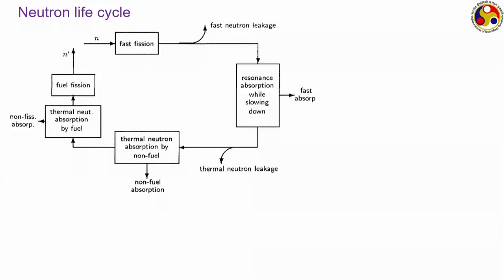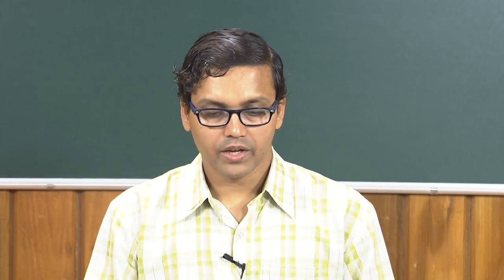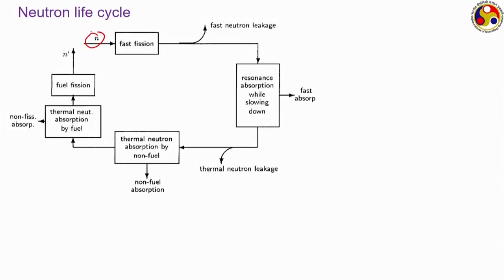Now we come to the neutron life cycle, which deals with the life history of a neutron — the events it undergoes from the beginning of one generation to just before the beginning of the next generation. We start with N number of fast neutrons available at the beginning of a generation, either produced by fission or by some other means. The first event to consider is fast fission: the fission cross-section for common isotopes like uranium-235 or -238 is very low for fast neutrons, but a small amount of fast fission can still occur, producing additional neutrons and increasing the total count. This is characterized by the fast fission factor ε.